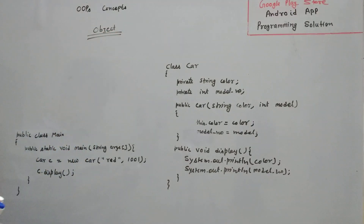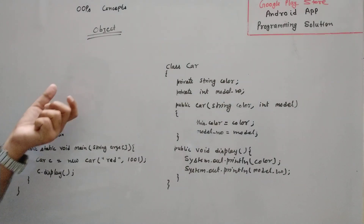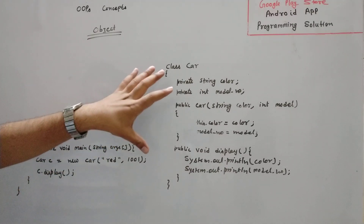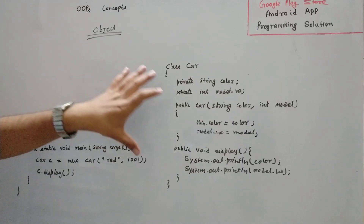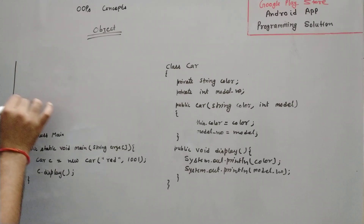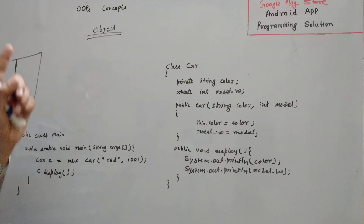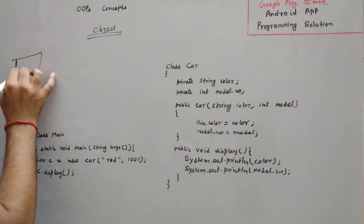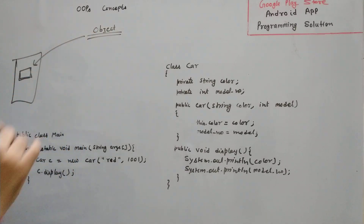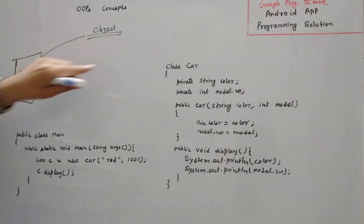In the previous video, we already covered the class concept. The class is a blueprint of an object — that means a virtual thing. Class is a virtual thing and object is a real thing. Object means it has some memory in system memory. Whenever we talk about objects, it occupies some space in memory. That memory block or space is known as object, and it is the real life implementation of class.